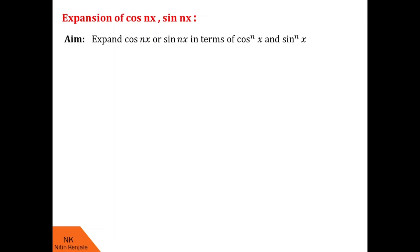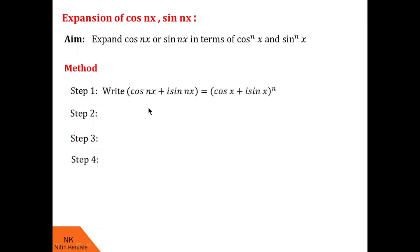Now let us see the steps involved in this method of expansion. There are four steps involved. In step 1, no matter whose expansion you want — either cos nx or sin nx — we will always begin with the statement: cos nx + i sin nx = (cos x + i sin x)^n. This is the reverse statement of De Moivre's theorem.